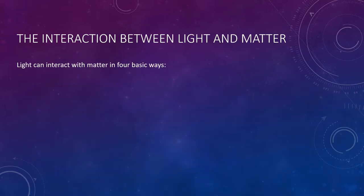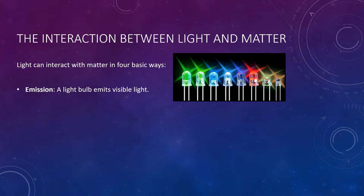Light can interact with matter in four basic ways, all of which are familiar in everyday life. First, emission. A lightbulb emits visible light. The energy of the light comes from electrical potential energy supplied to the lightbulb. So here I have a picture as an example showing the emission of light from LEDs.